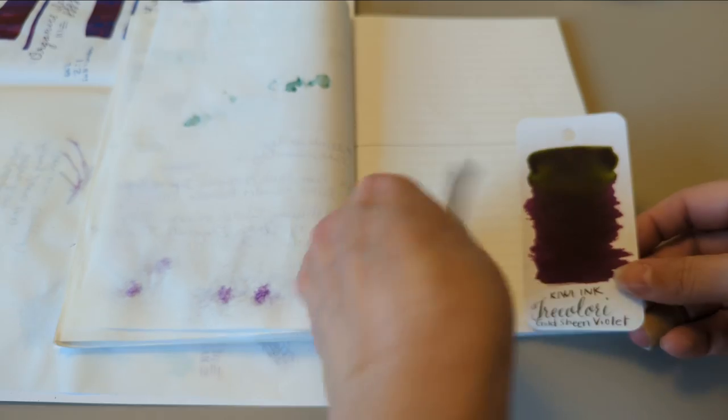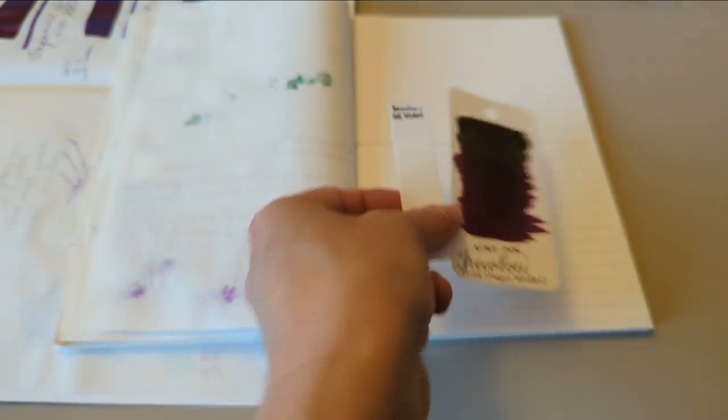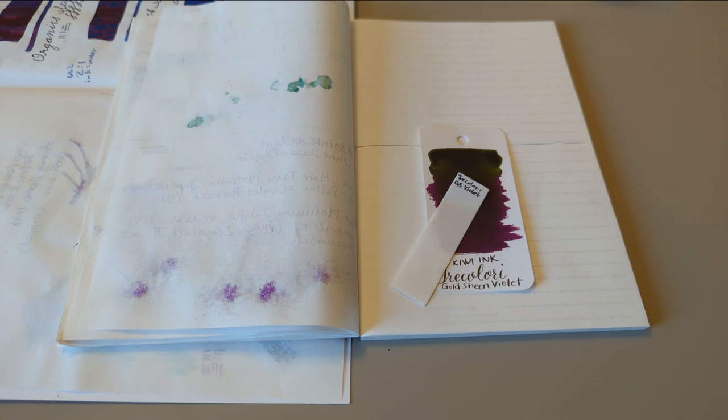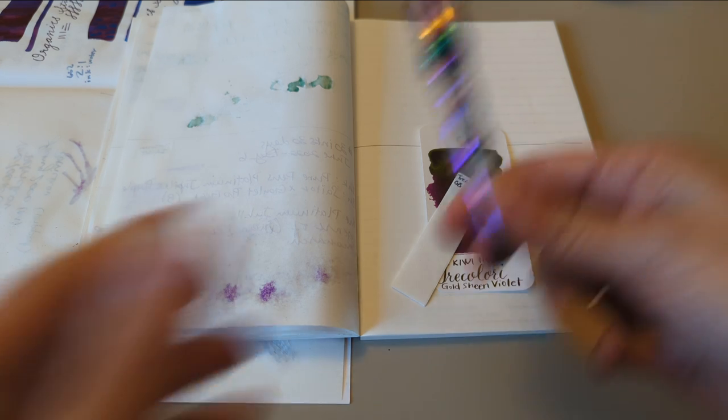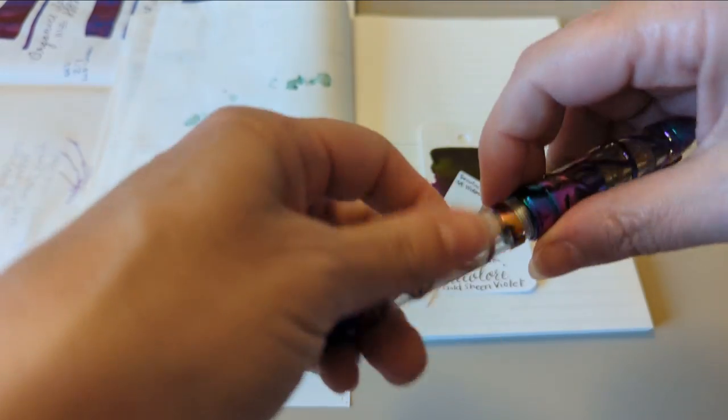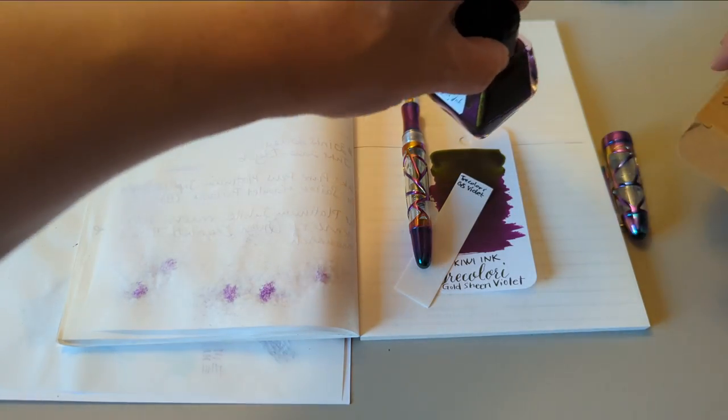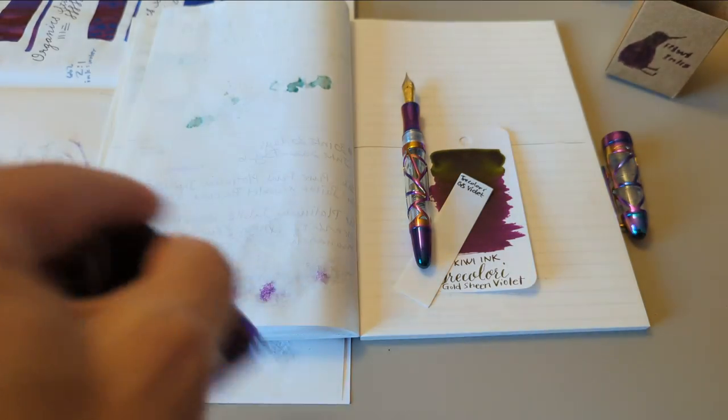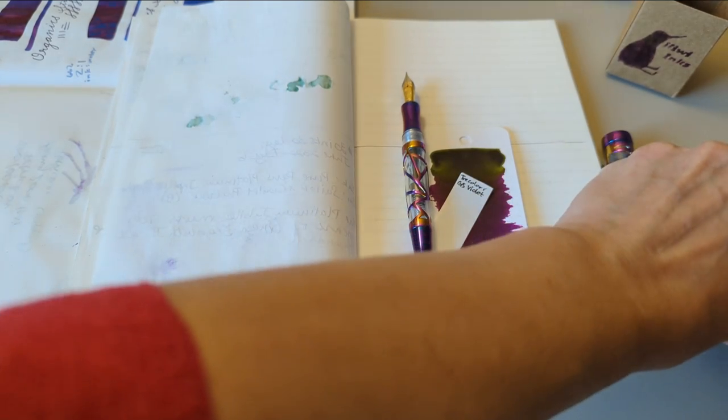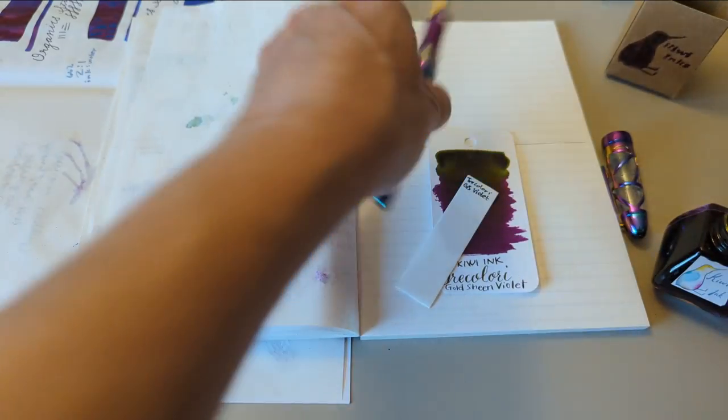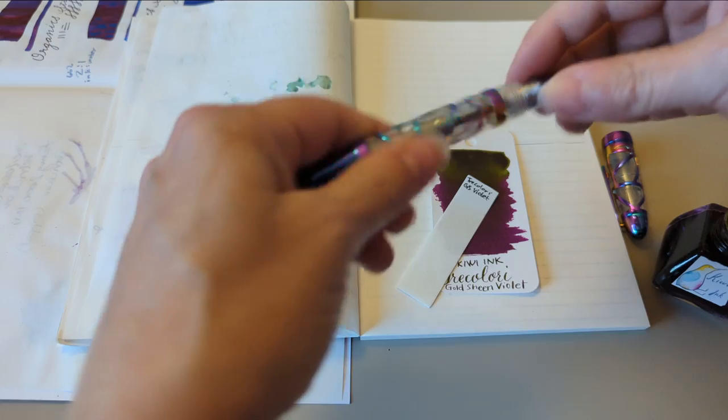So I guess today's ink is this. Kiwi Ink, Tricolori, Gold Sheen Violet. Now, what pen do I want to put this in? I'll tell you what. It feels like it would be appropriate in this pen. So, let's grab that. I'm going to give it a roll. This is my LeBon skeleton, rainbow skeleton pen.